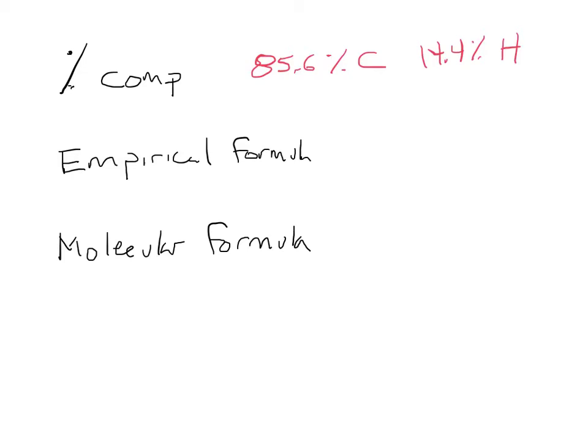From that information, we learned how to get the empirical formula, so we can calculate it from the percent composition. We would find out the empirical formula of this particular compound is CH2. So that means for every one carbon there are two hydrogens. That doesn't mean the molecule has one carbon and two hydrogens — that's just the ratio of carbon to hydrogen, a one-to-two ratio.